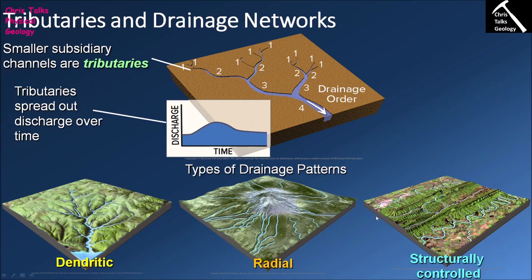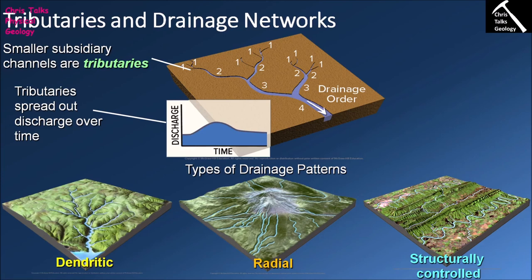The result is rivers running parallel to each other with very short tributaries coming off the sides. This particular pattern — main rivers running parallel to each other with short tributaries — is often referred to as a trellis pattern or trellis drainage network. It is commonly associated with areas where the path of rivers is being affected by geology, meaning structural controls.